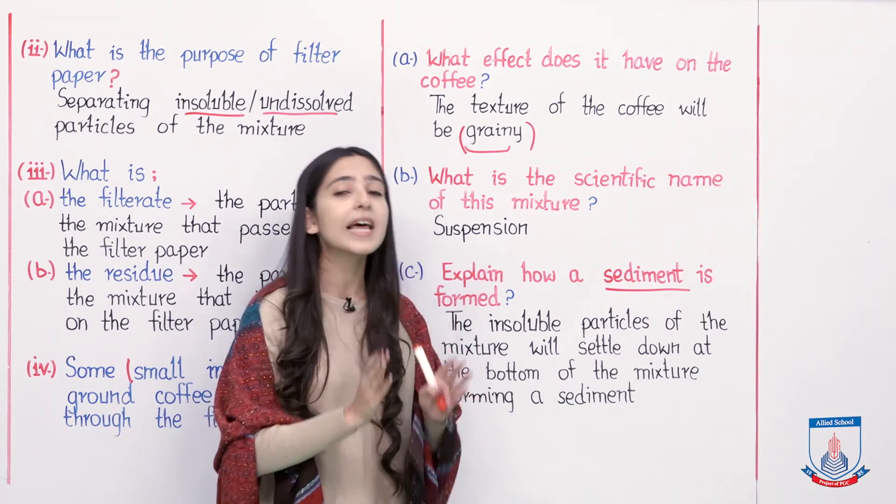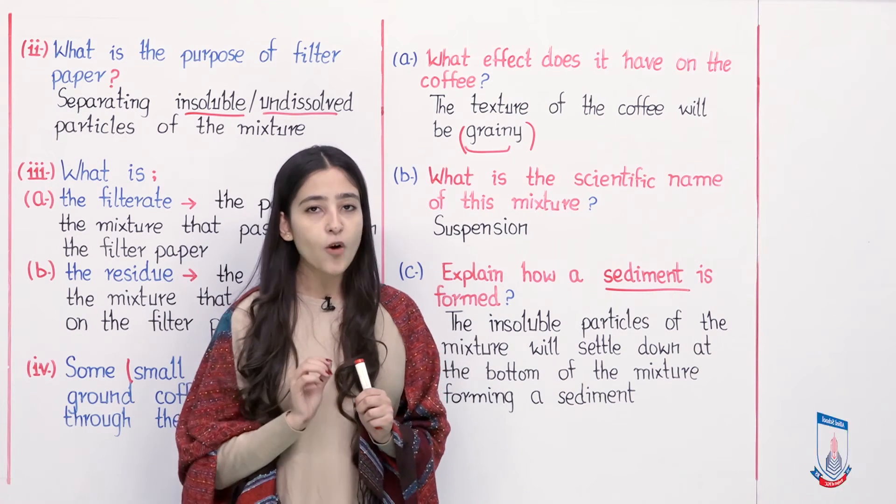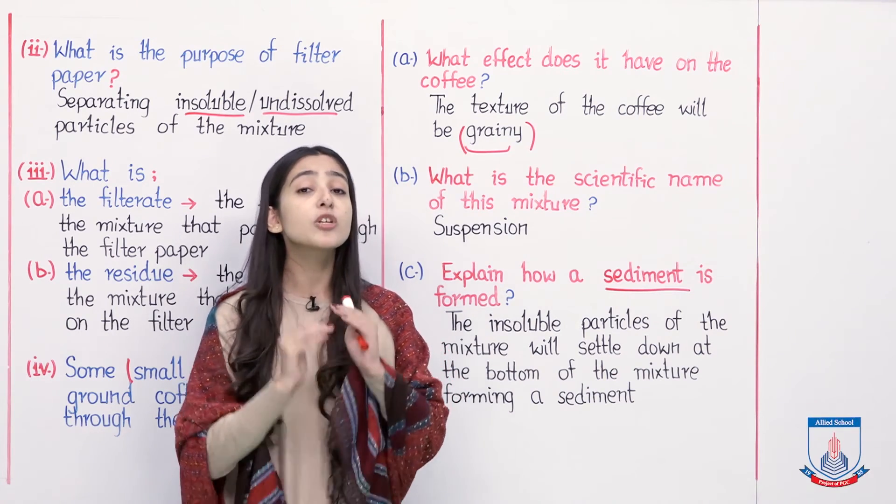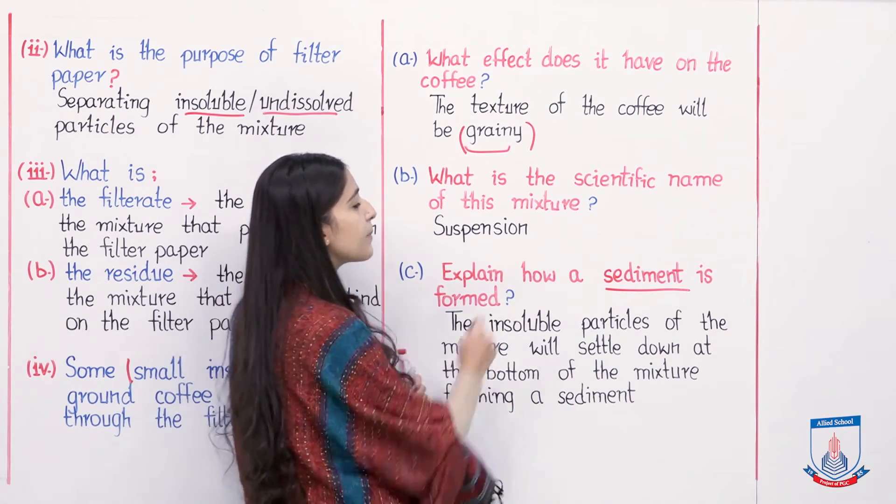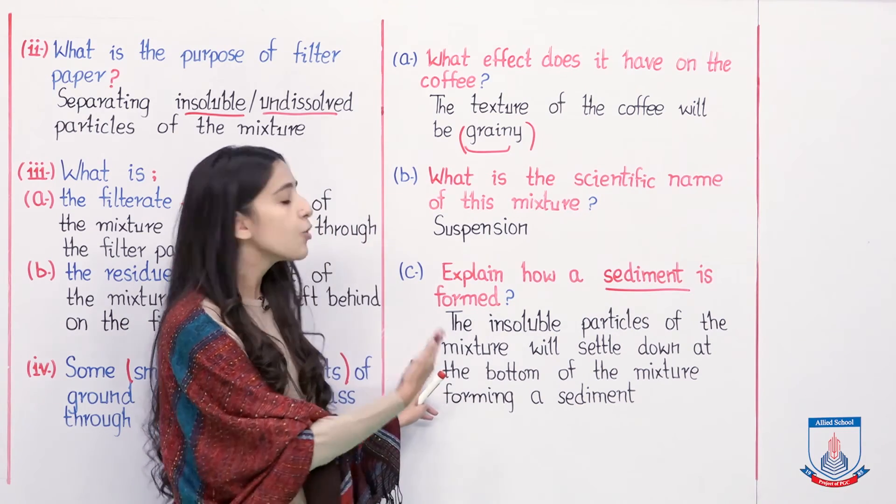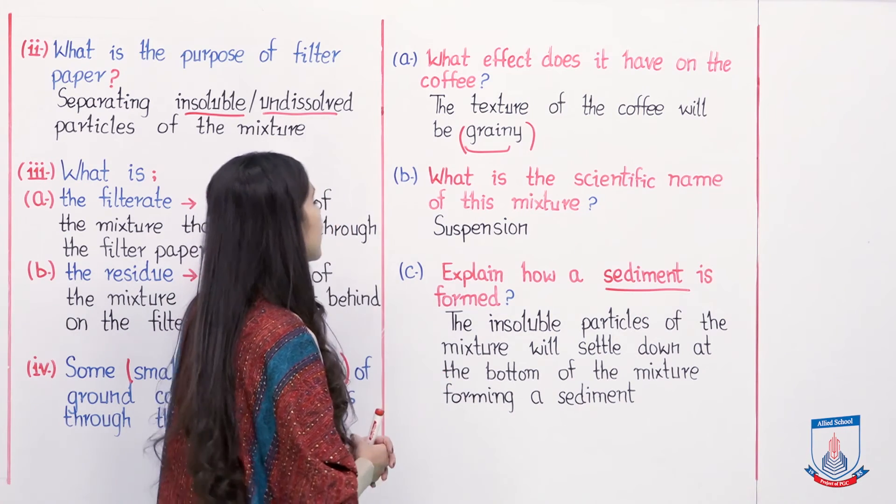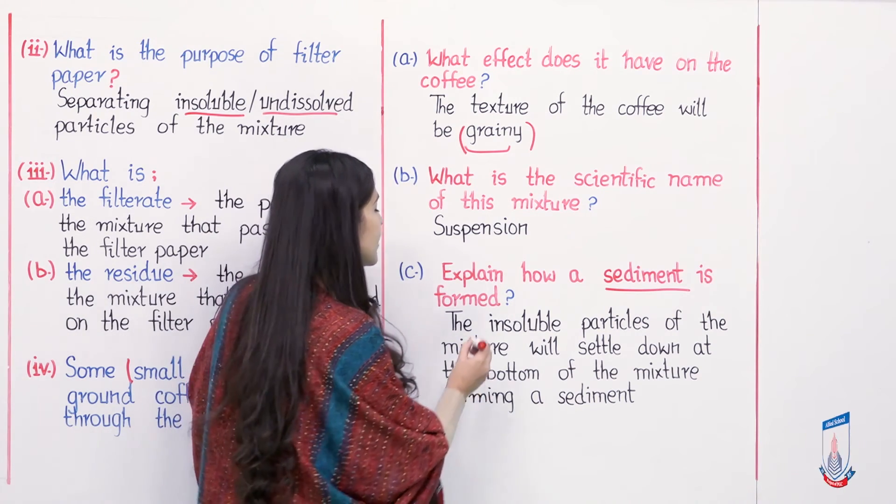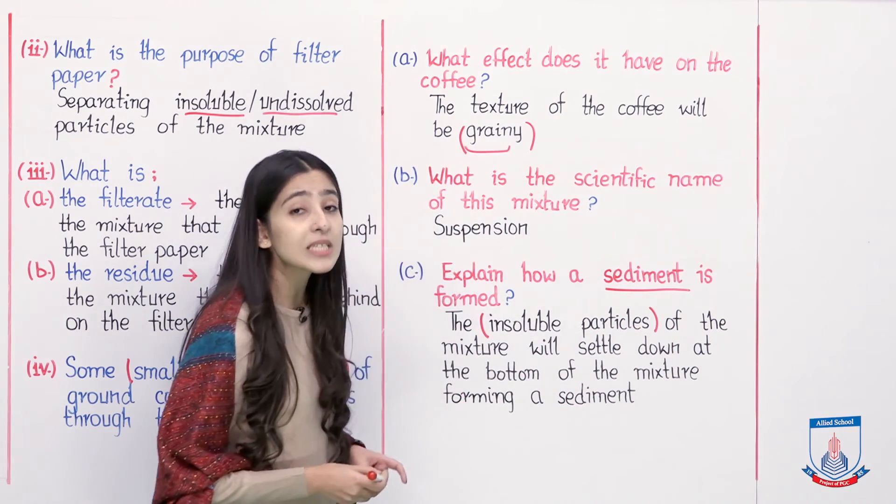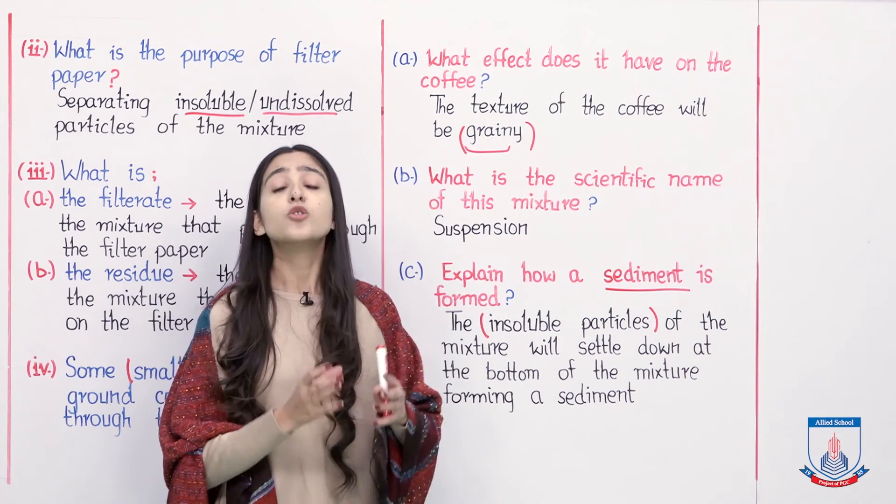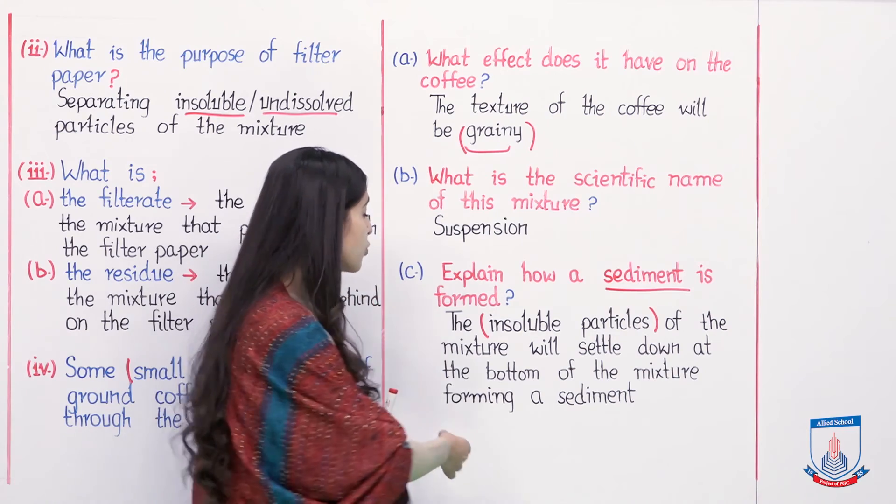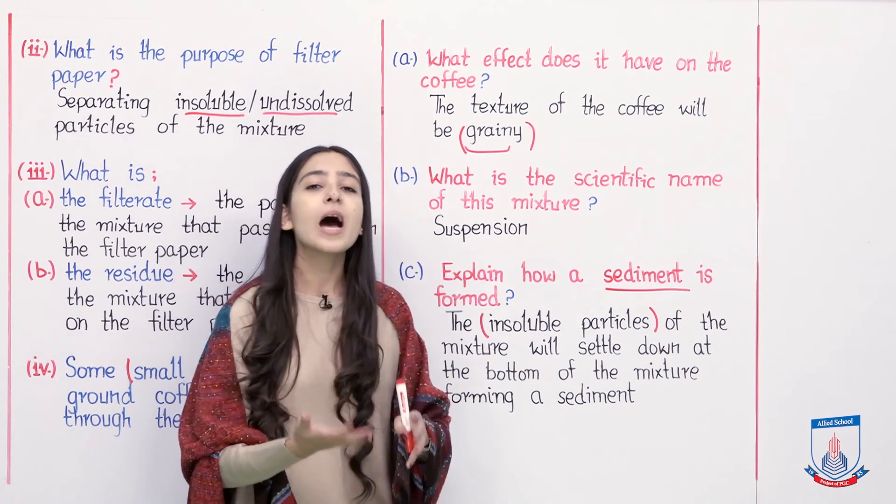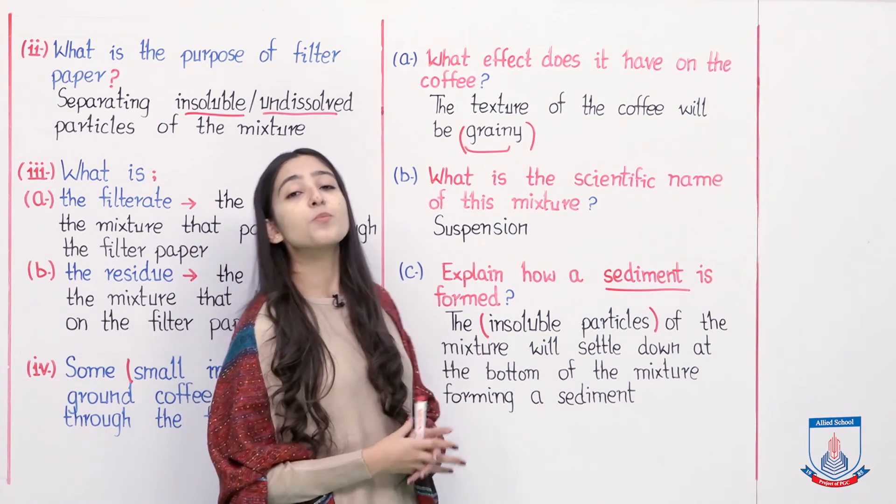In this apparatus, in the beaker inside, we have a filtrate. If we do not remove it and leave it aside, then the insoluble bits of coffee, the small particles, will settle down at the bottom of our beaker and water will remain above. This is called sediment. The deposited solid particles are called sediment. The answer is: the insoluble particles of the mixture will settle down at the bottom of the mixture, forming a sediment.